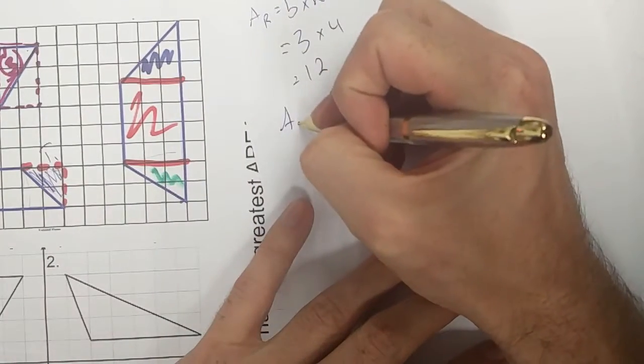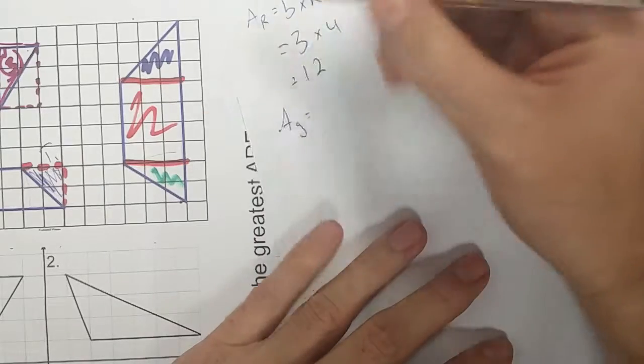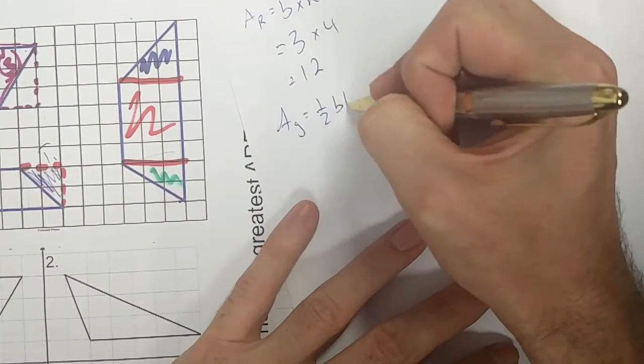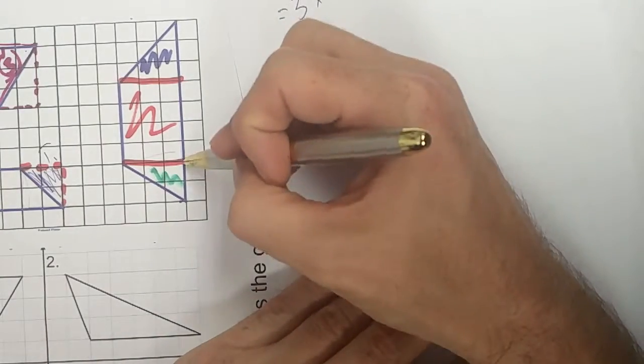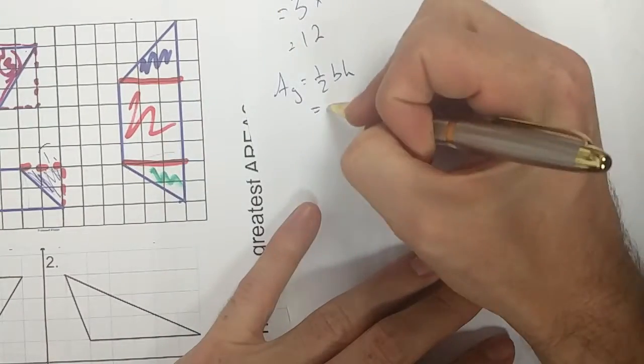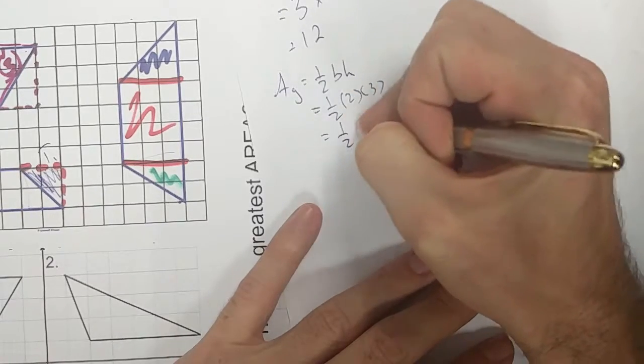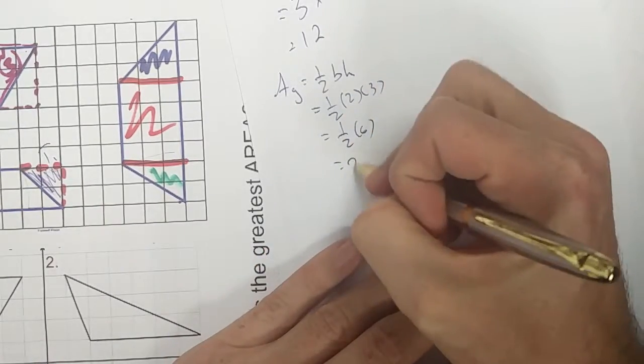This area over here, area of the green. I know area of a triangle is half the area of a rectangle. So it's half base times height. I have a base here of two and a height of three. So it's going to be half of two times three. So that's half of six. And it's a total of three.